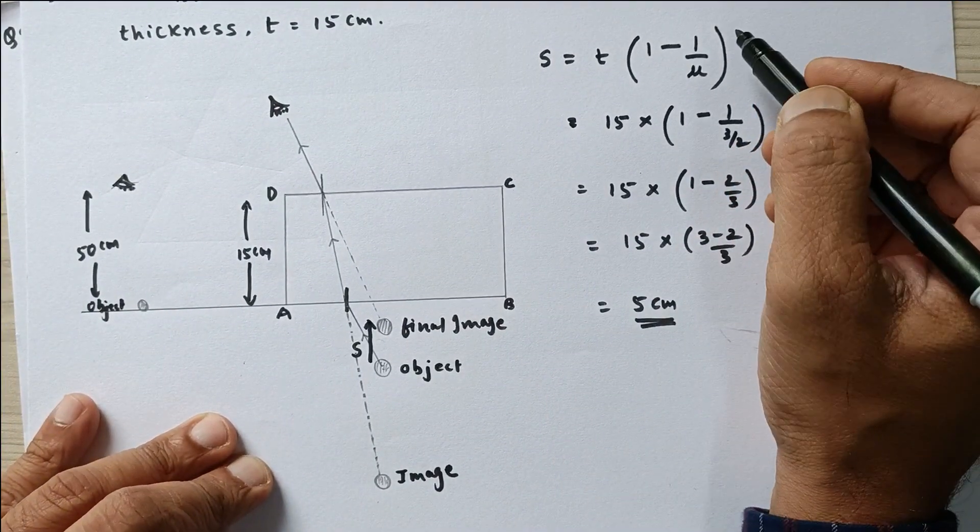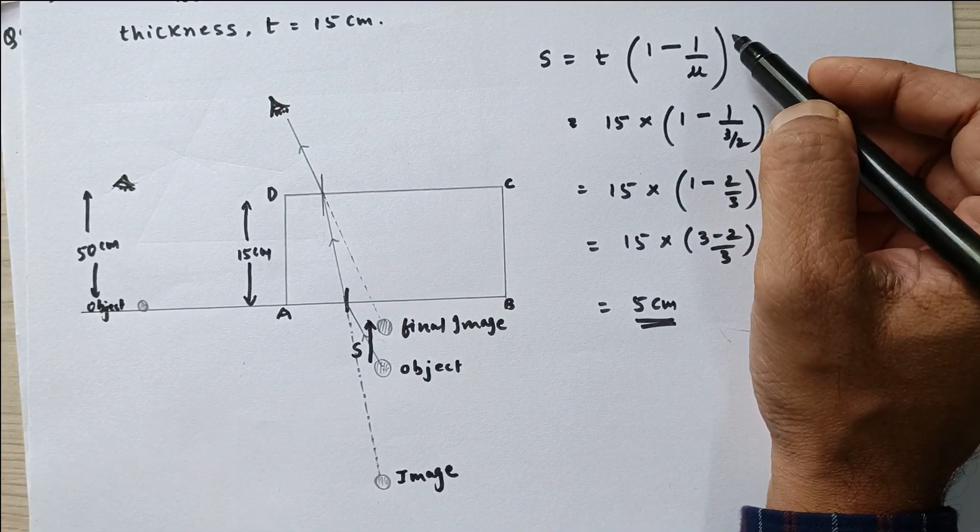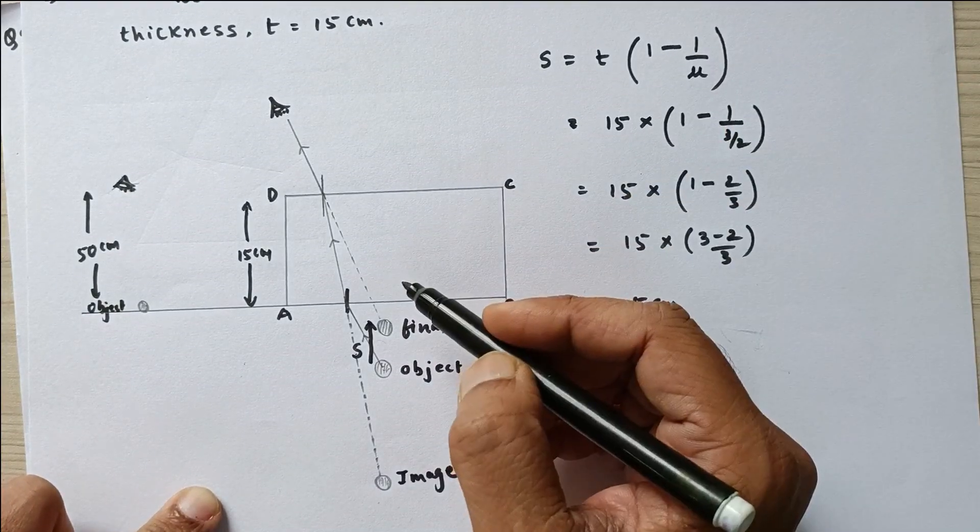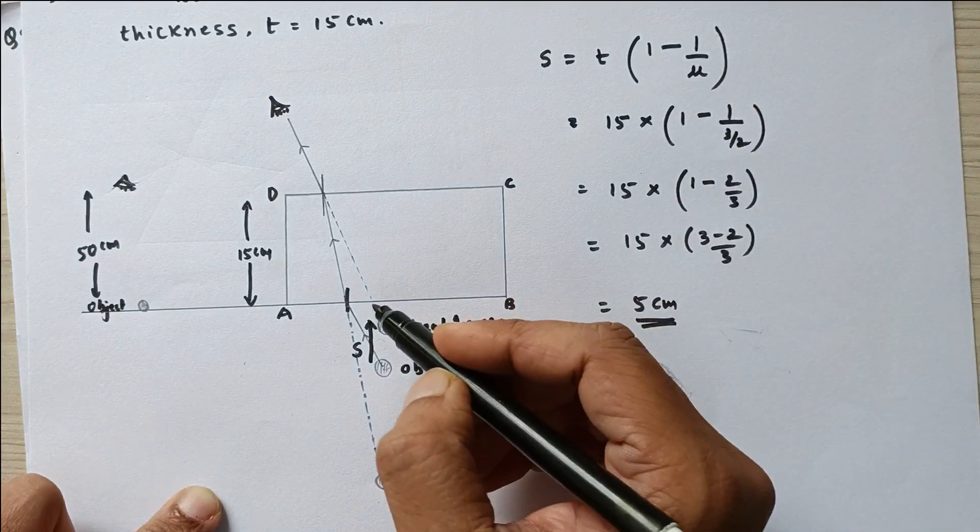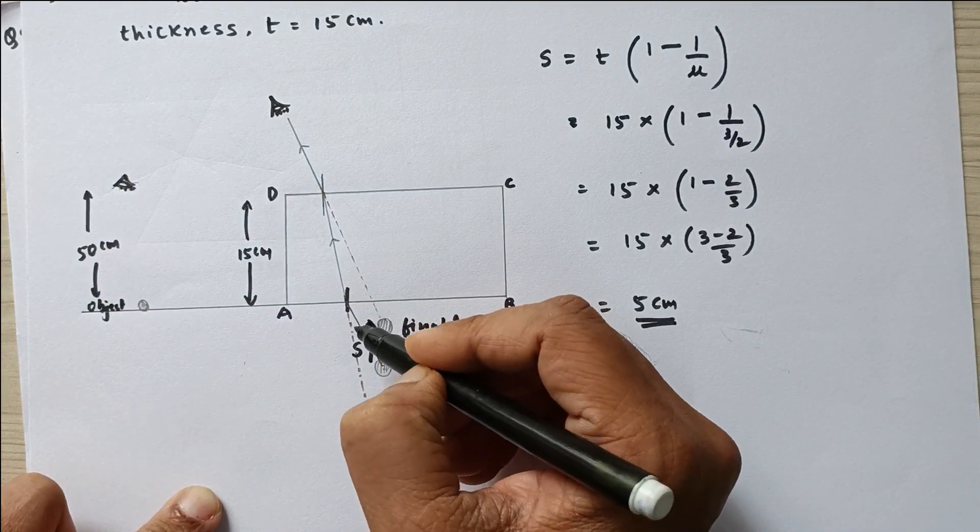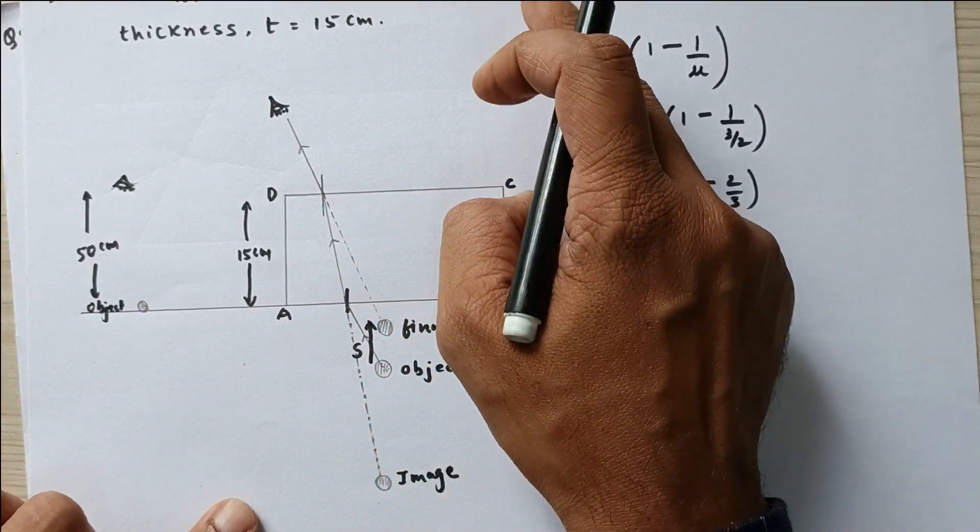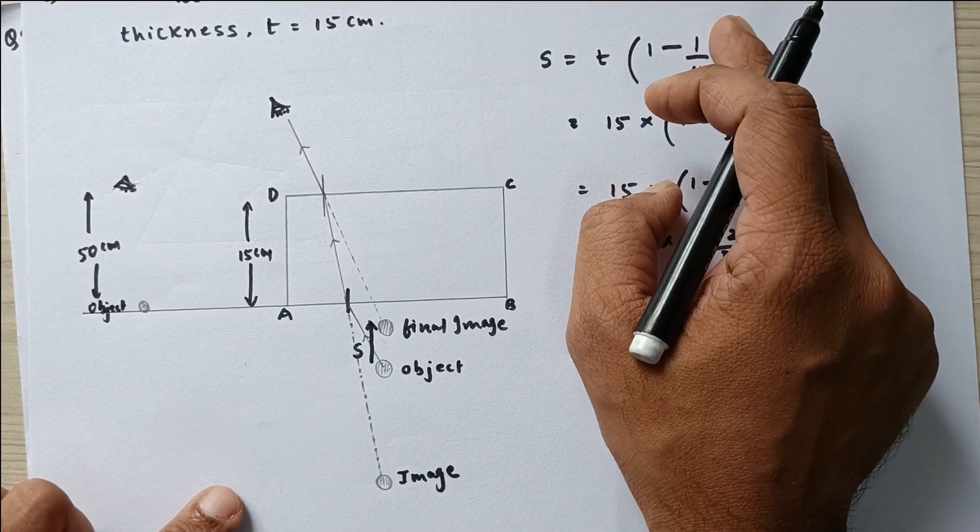Now you have to understand that this derivation is actually derived by keeping in mind very small angles. So the angle of incidence, angle of refraction, all angles are very small. So on that basis we have derived this equation.